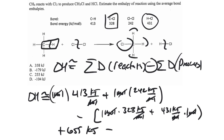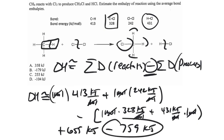The delta H of reaction equals 655 kJ to break bonds, minus 759 kJ gained forming bonds, giving minus 104 kJ. The mole unit cancels, and delta H of reaction is in units of kJ. Forming bonds is exothermic — that's why we have the minus sign. A reaction is exothermic when we make stronger bonds than those we start with.